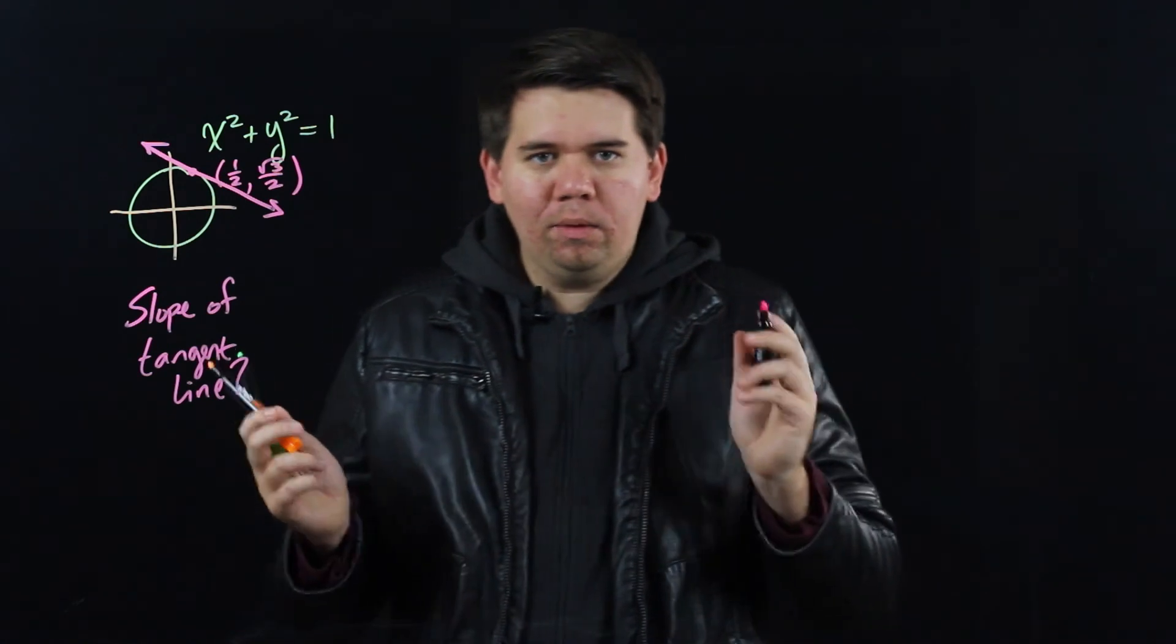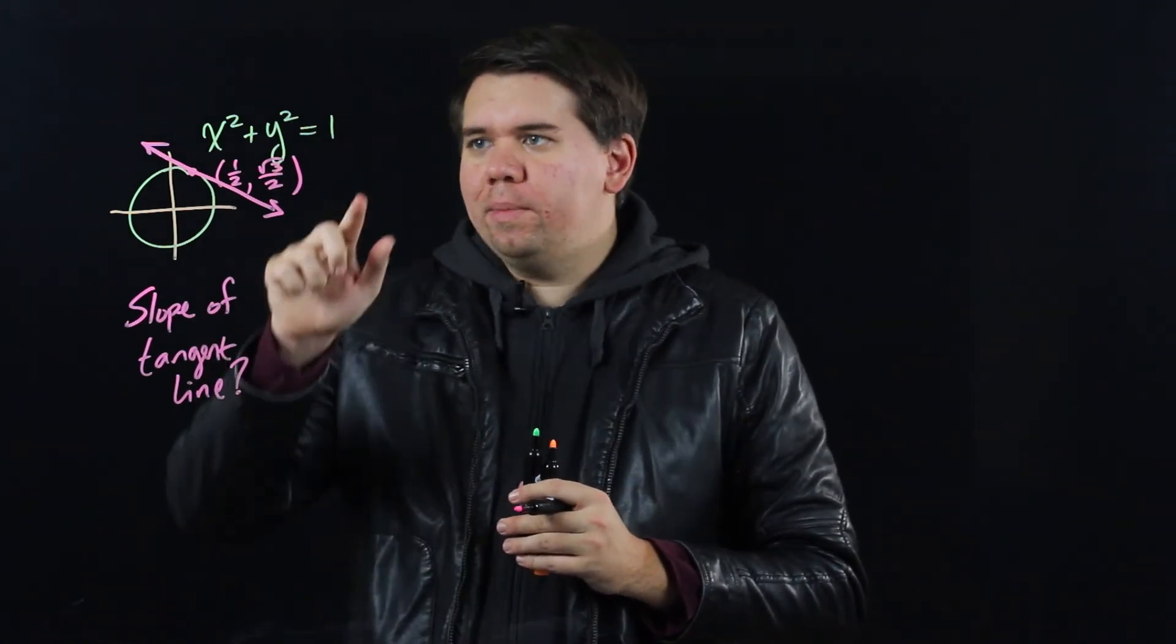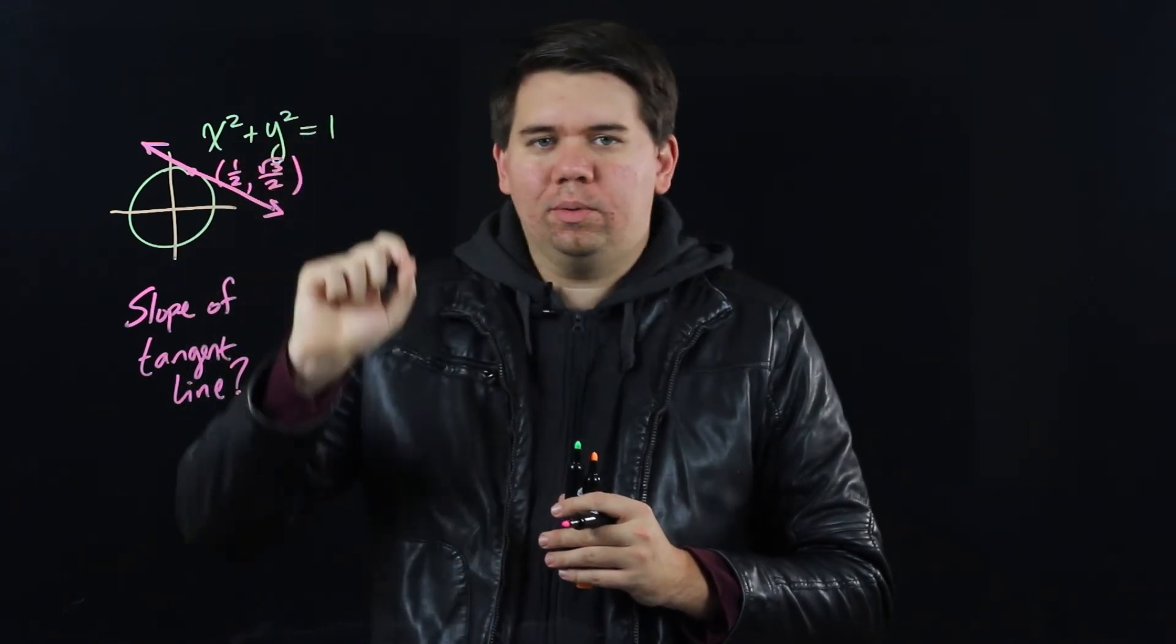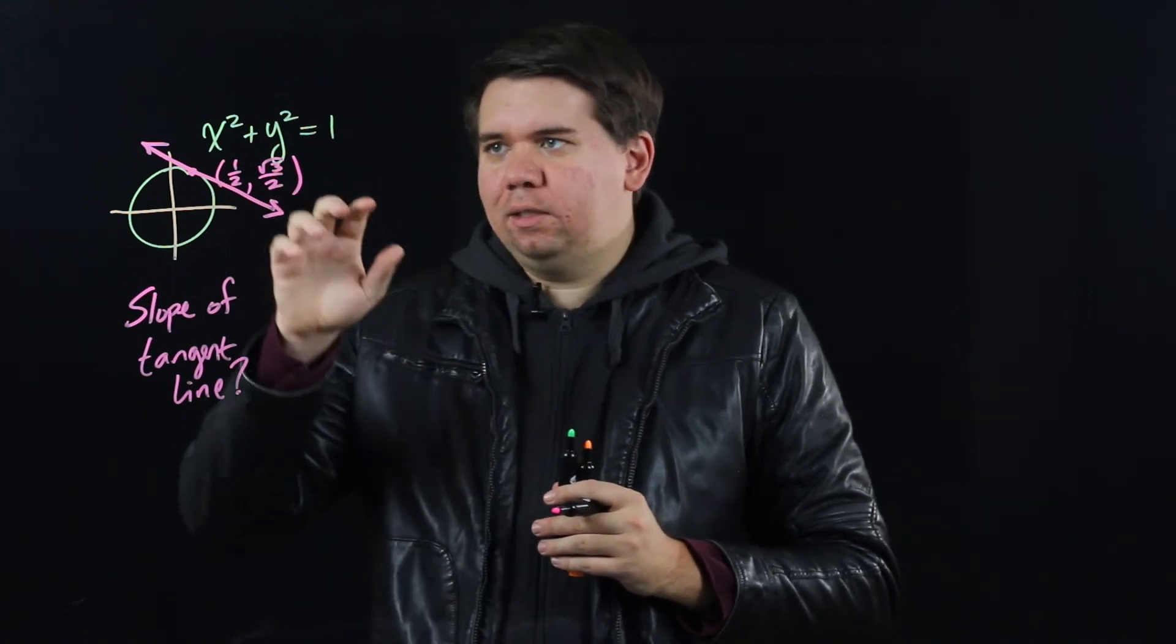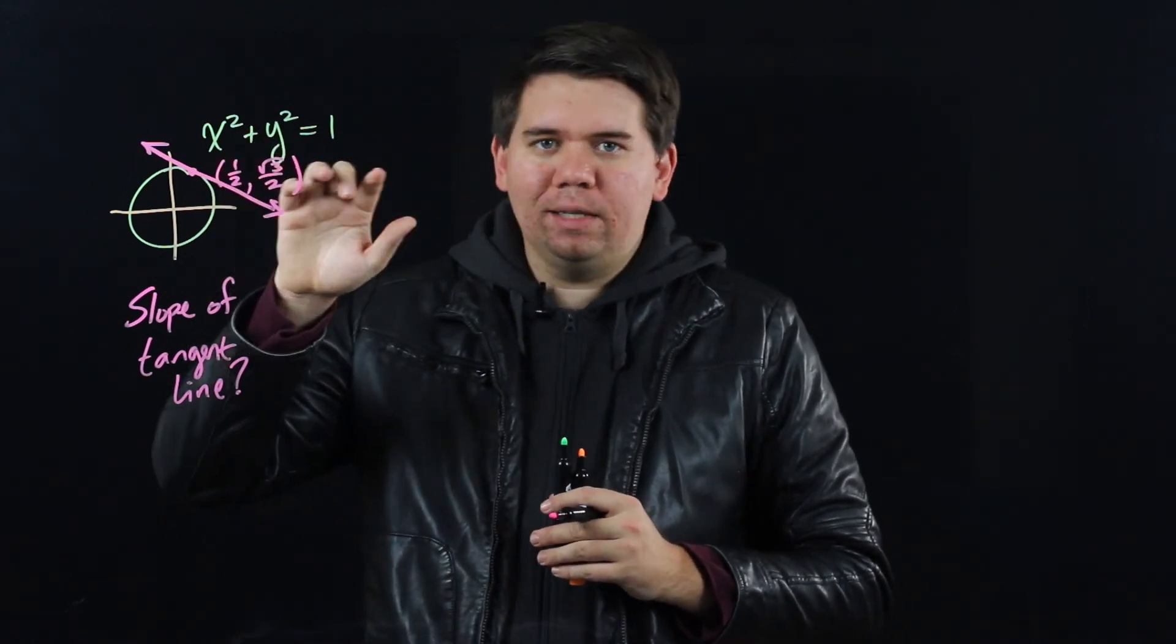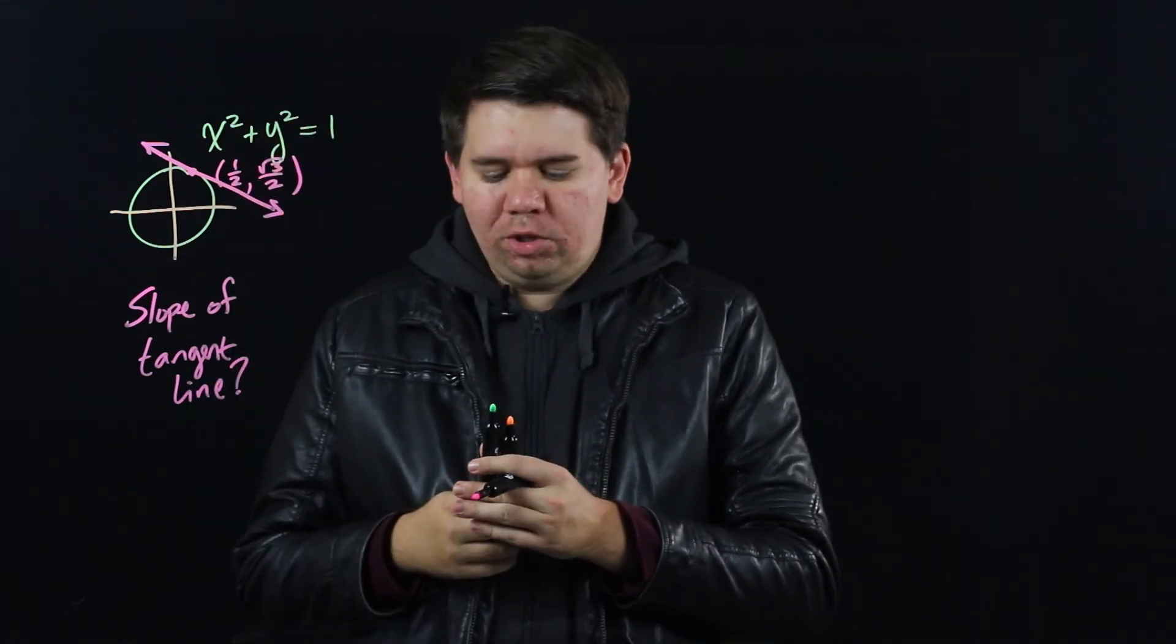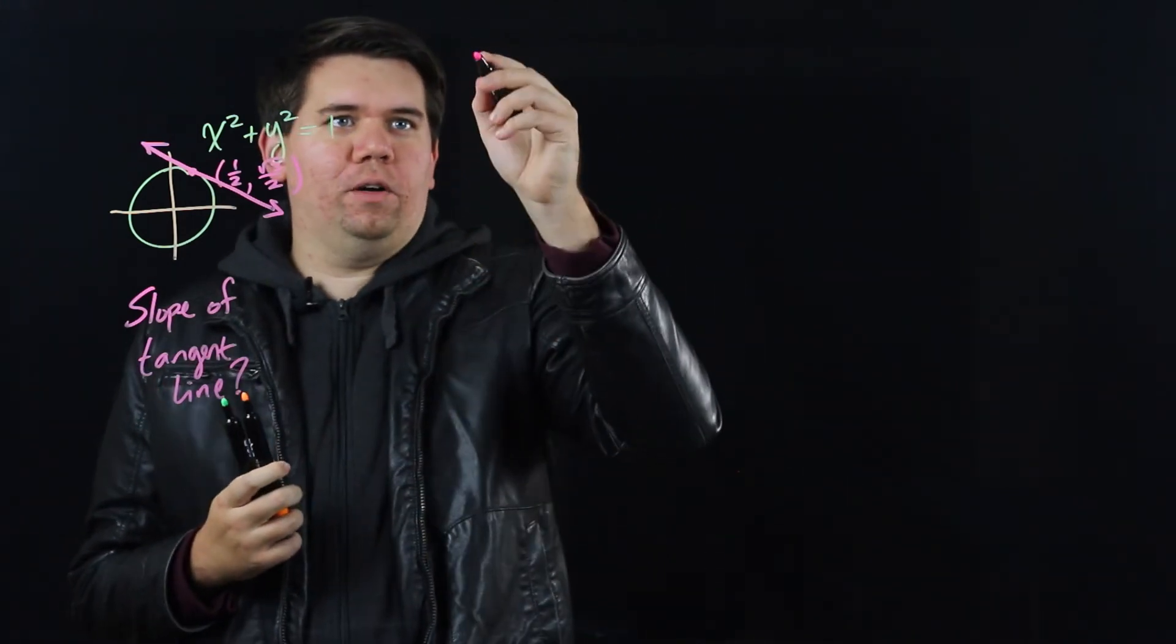Well, we know what we need to do. We should find some kind of derivative. But the problem is the expression as it's written right now, x squared plus y squared equals 1, is not a function in terms of x. It also has both x's and y's. And so one way we might try to approach this is we might just try to solve for y. So here's one of our approaches. Approach number one: we could solve for y.